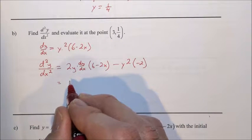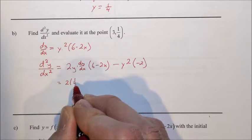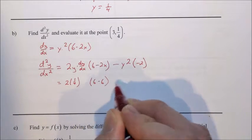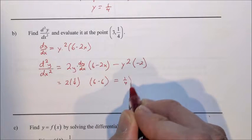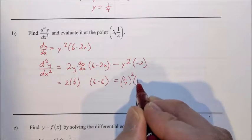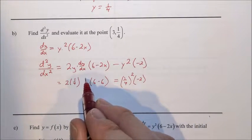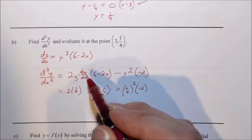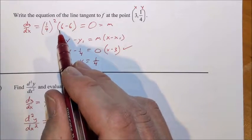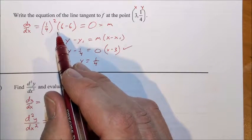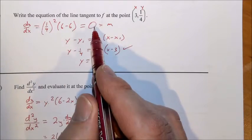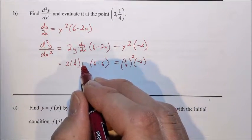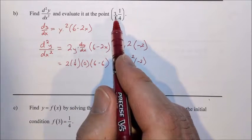So we plug in 1/4 for y, and we plug in 3 for x, and the question becomes, what about dy/dx? What do we plug in there? And the answer is we plug (3, 1/4) into dy/dx, which is what we did back up here in part A. When you plug (3, 1/4) into dy/dx, you get 0. So dy/dx is replaced by 0 at the point (3, 1/4).